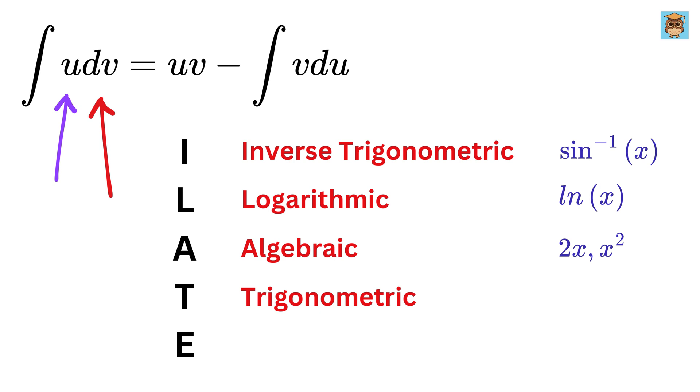T stands for trigonometric functions, like cosine of x. And E stands for exponential functions, like e raised to x or 3 to the power x.